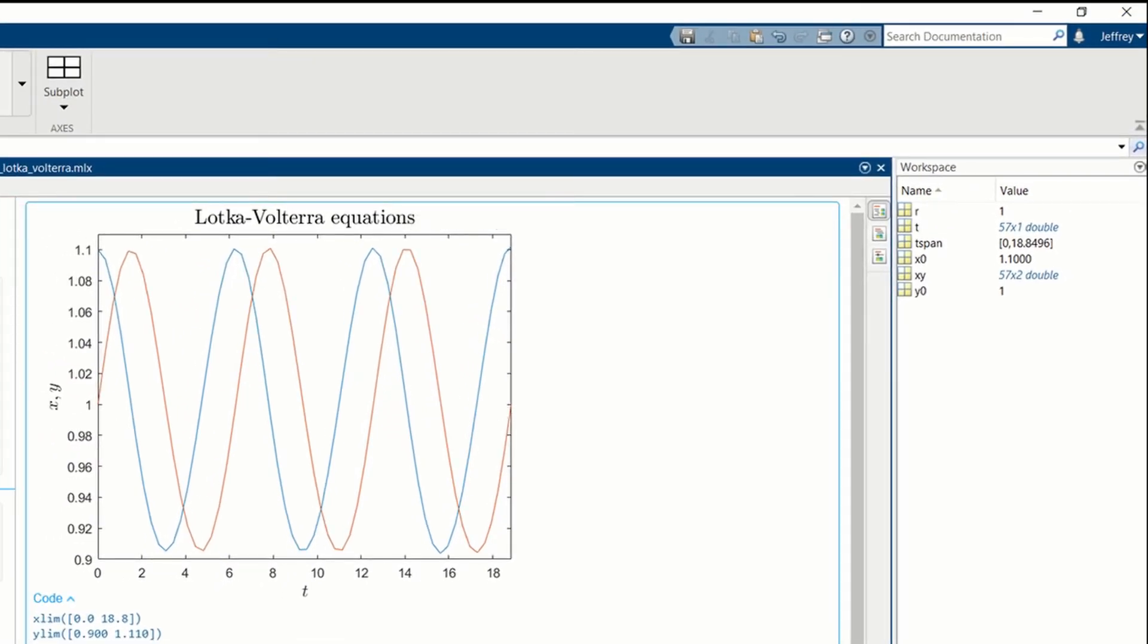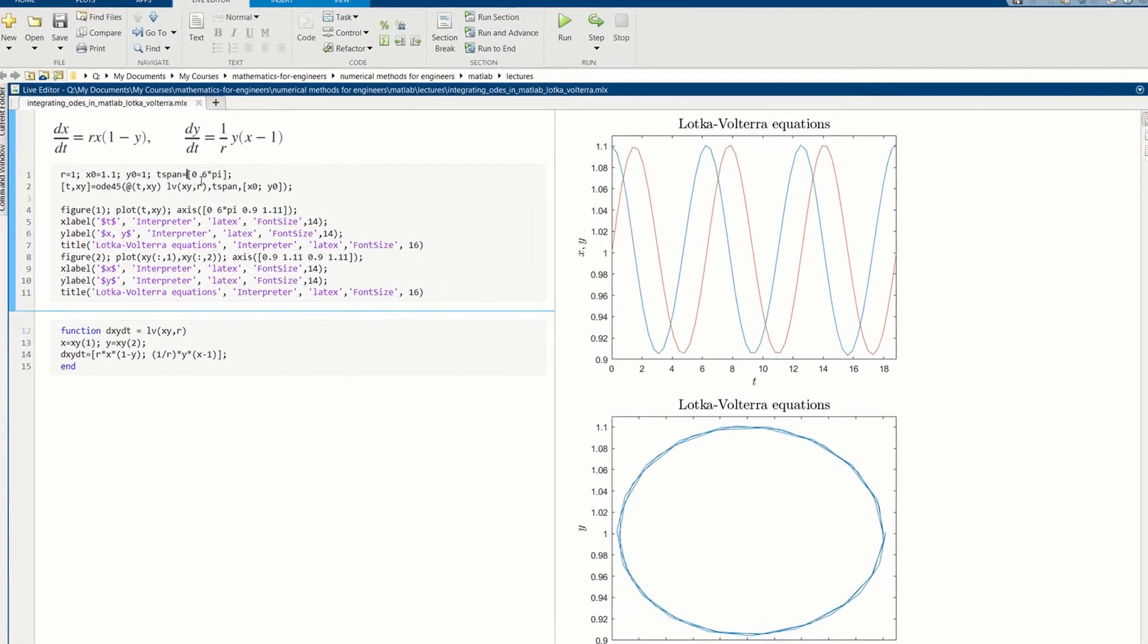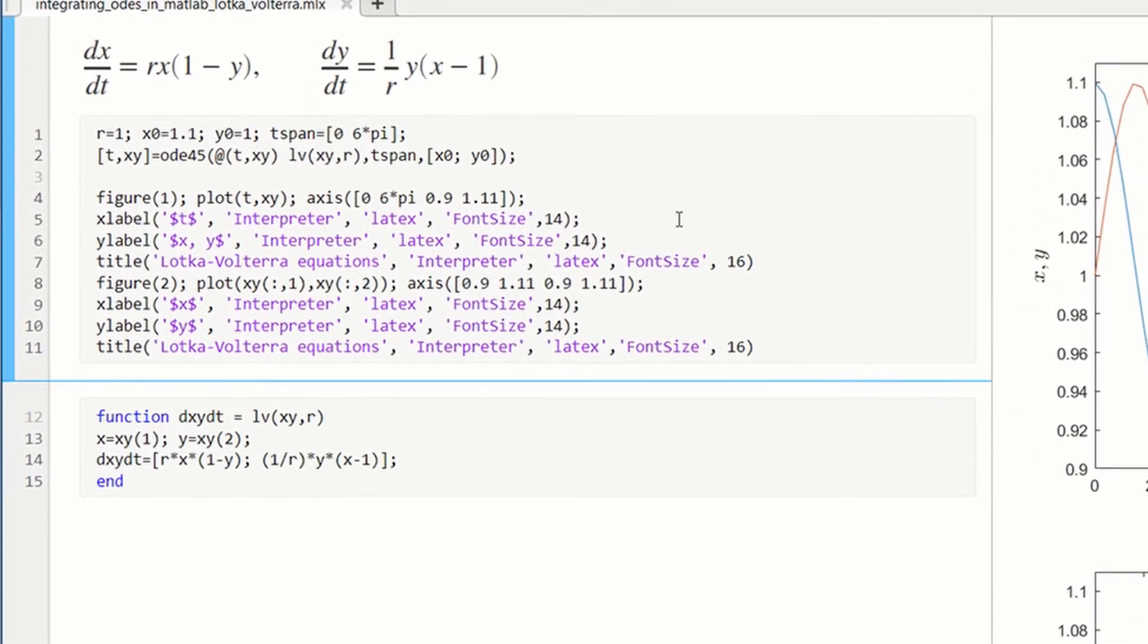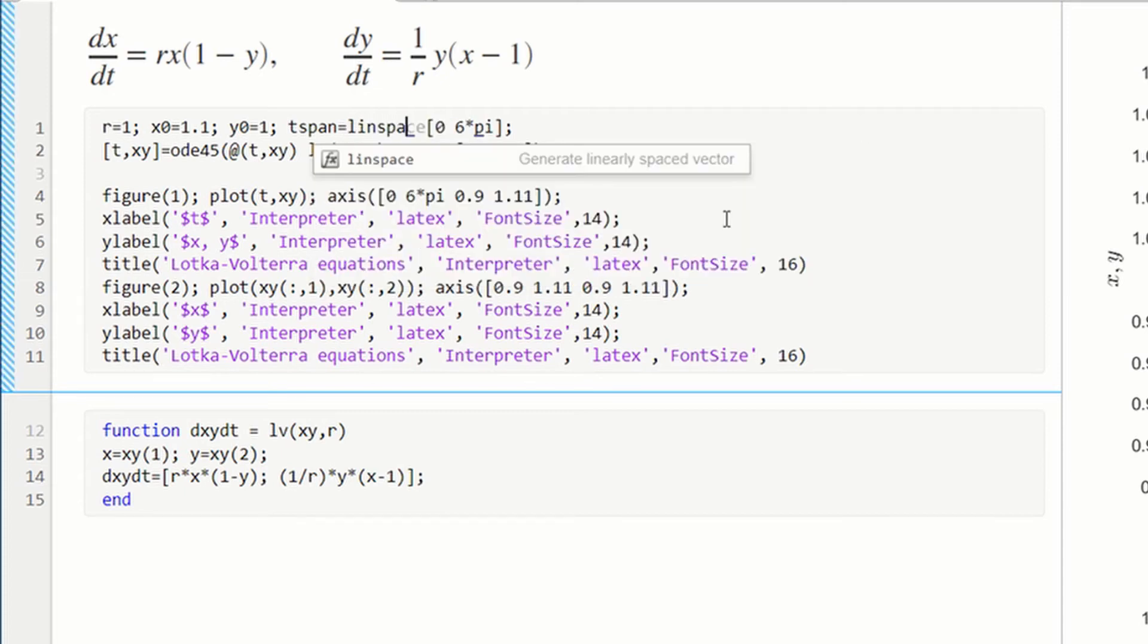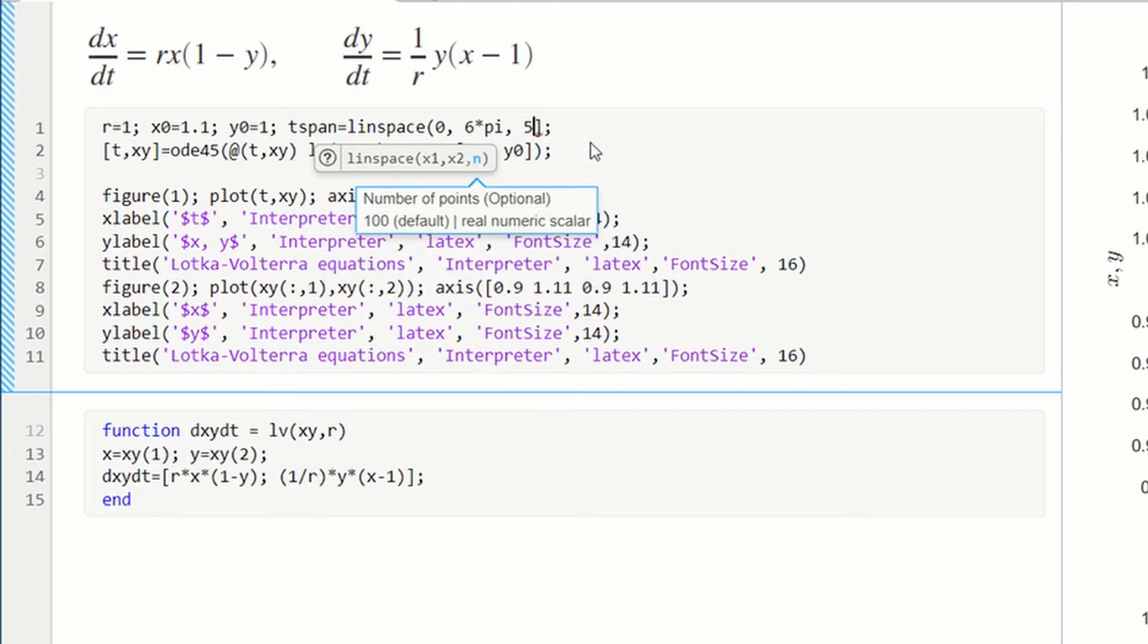MATLAB is outputting the solution of ODE45 is outputting only 57 points. We can fix that by changing t-span. So instead of just specifying the first value of t and the last, we can put here the linspace function. And then we can go from 0 to 6 pi, but we can specify how many points we need. So you can put a large number here, but here we had 57. So if we go about a factor of 10 more, that's probably enough points.